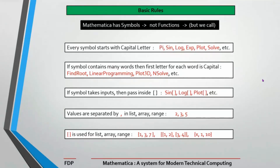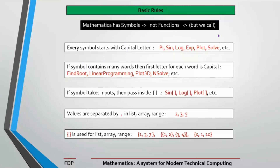Now let's talk about the basic fundamental rules of Mathematica — rules you must learn, remember, and follow when writing your code. The first rule: every symbol starts with a capital letter. In Mathematica we have symbols — though we often call them functions — and every mathematical symbol has a capital first letter. For example: Pi (P capital), Sin (S capital), Log (L capital), Exp (E capital), Plot (P capital), Solve (S capital).